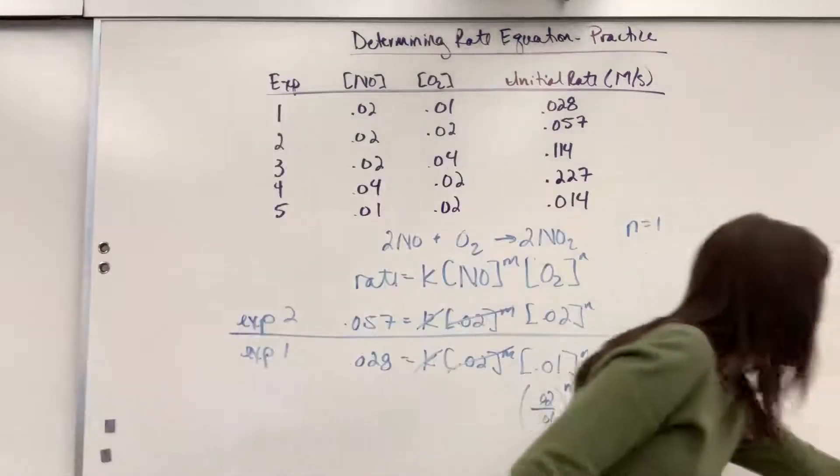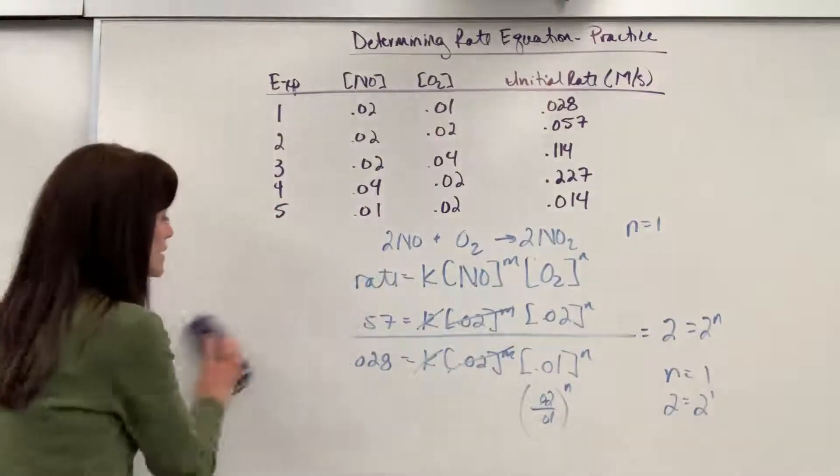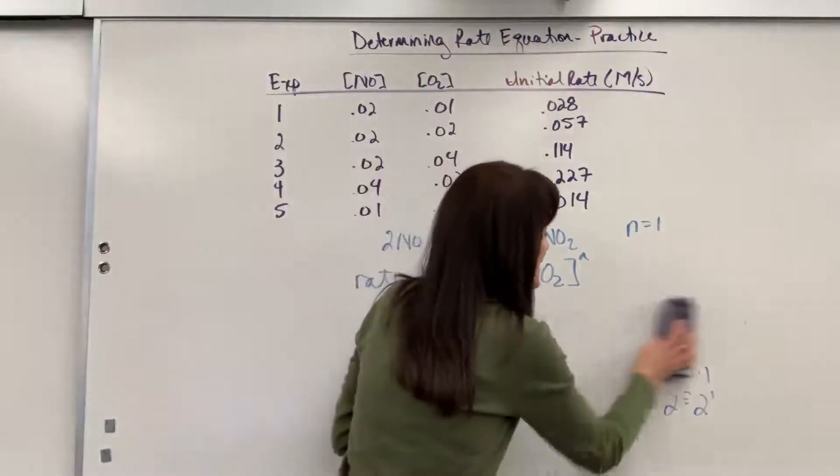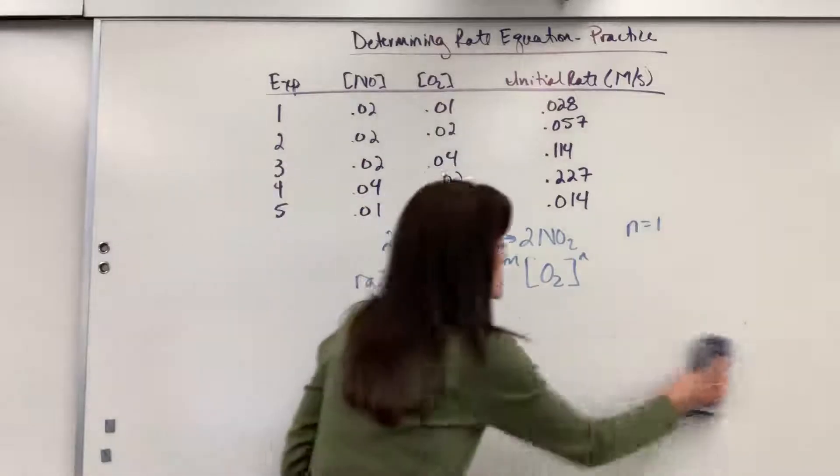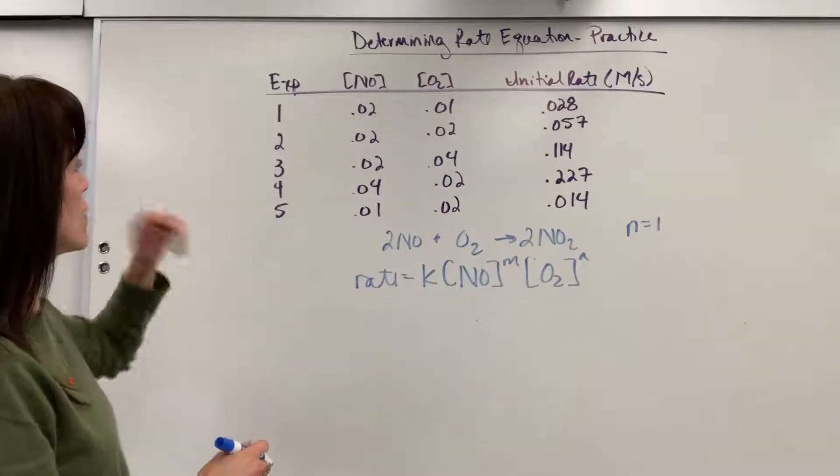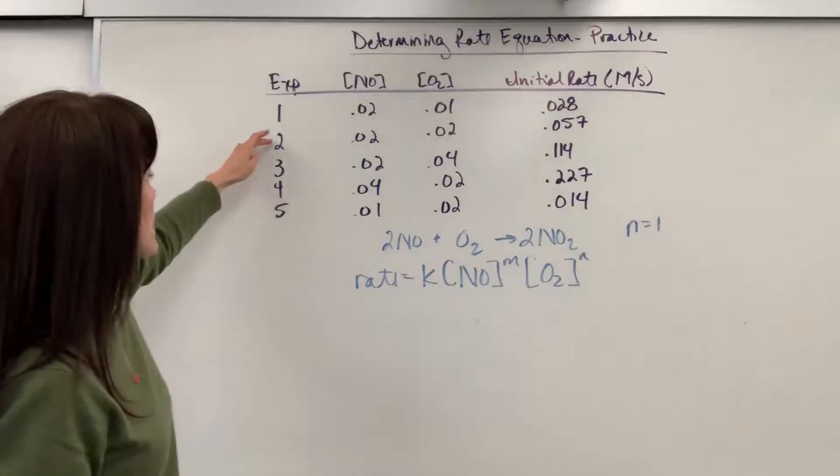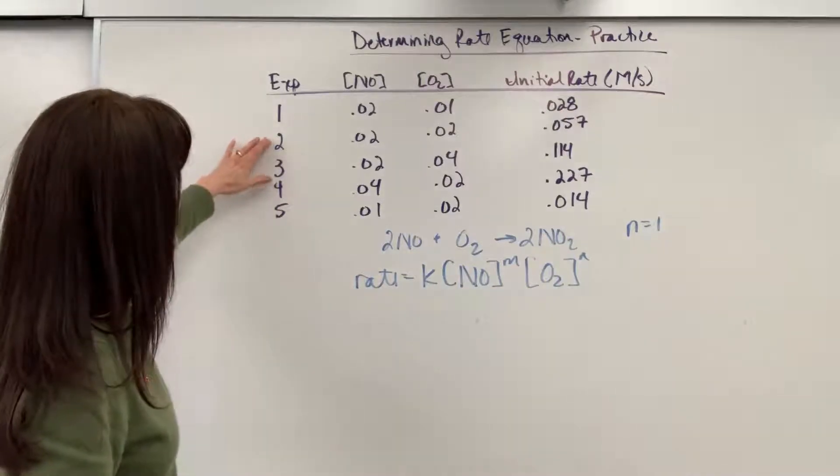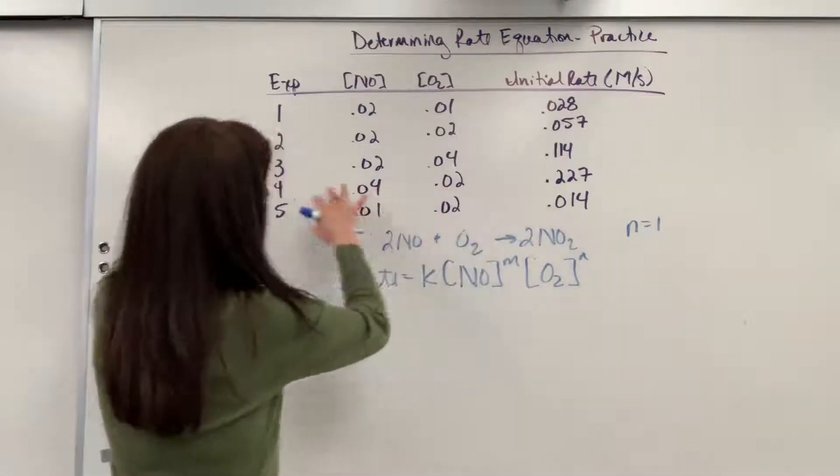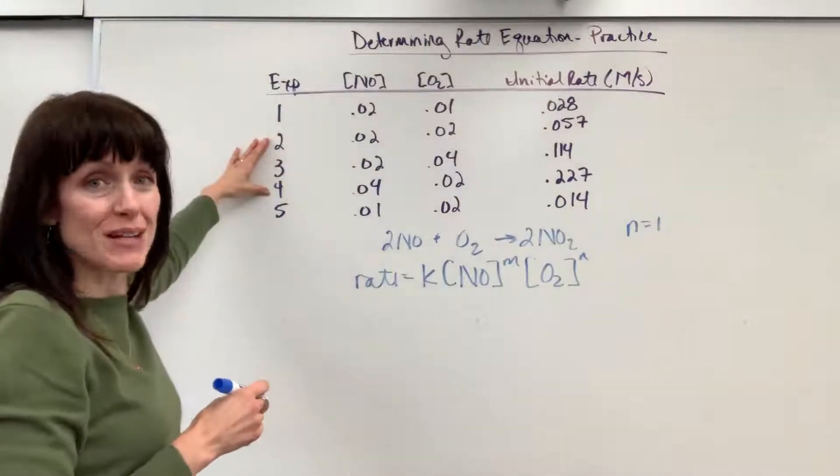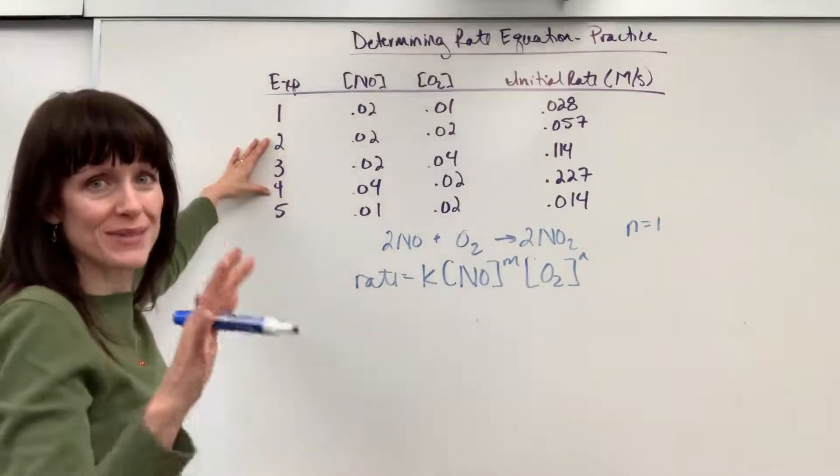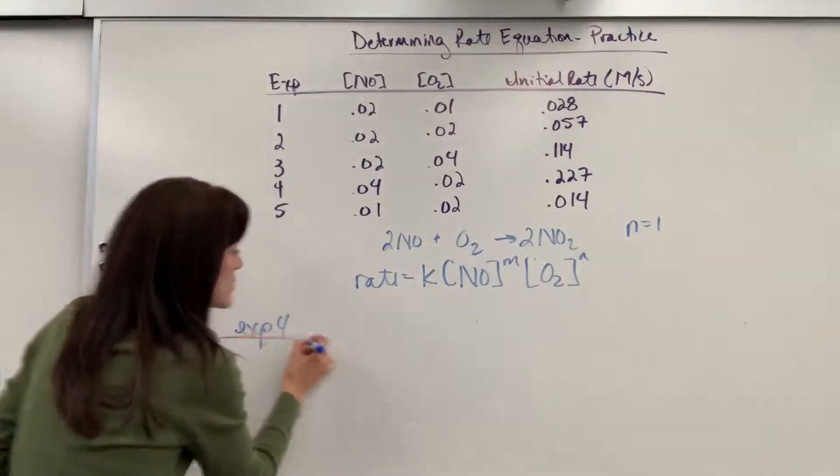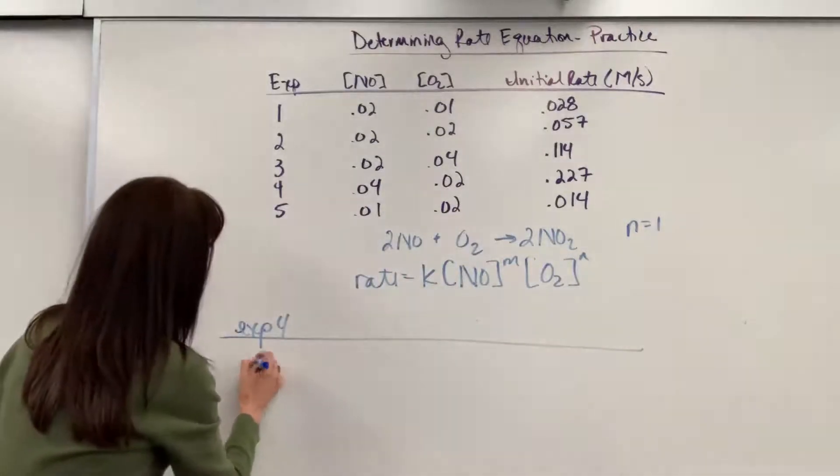So now we want to find M. In order to find M, I'm going to pick two trials, but this time I want to pick two values of O₂ that are going to cancel out. So let's see what we've got. We could pick trials 2, 4, or 5 because they're all 0.02. Let's go ahead and do trials 2 and 4. I look at my values. I'm going to put trial 4 in the numerator because it has larger numbers. So when we divide, we get whole numbers, not fractions. So we're going to have experiment 4 divided by experiment 2.